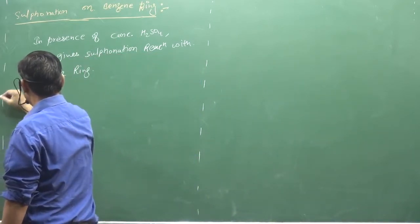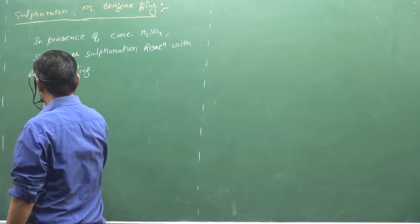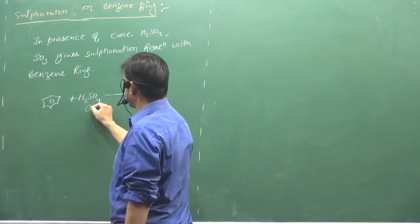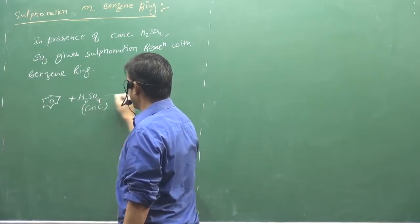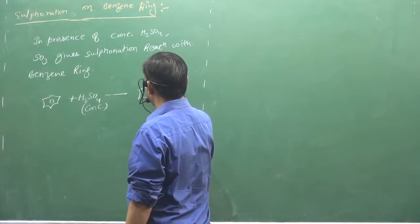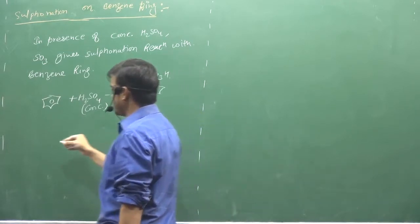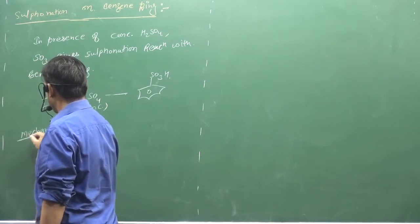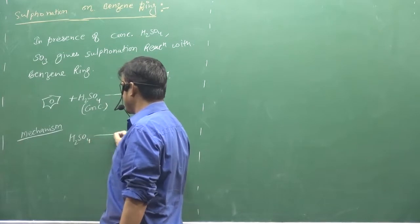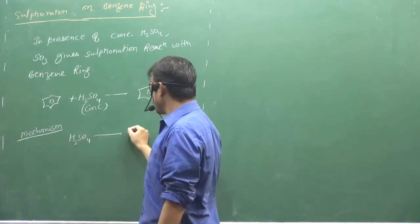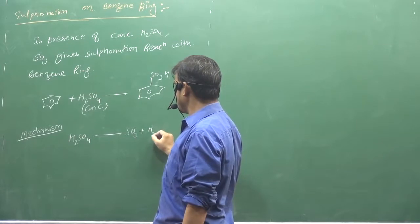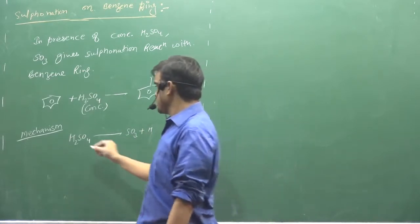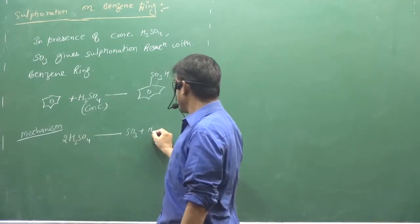Mechanism of the reaction. H2SO4 concentrated, SO3. The product final is SO3H. The mechanism involves H3O+.